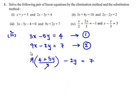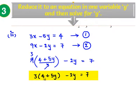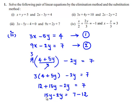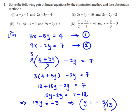Since 3 goes into 9 as 3, this becomes 3 times of (4 plus 5y) minus 2y equals 7. Expanding: 12 plus 15y minus 2y equals 7. Transposing 12: 15y minus 2y equals 7 minus 12, so 13y equals minus 5. Therefore y equals minus 5 by 13.